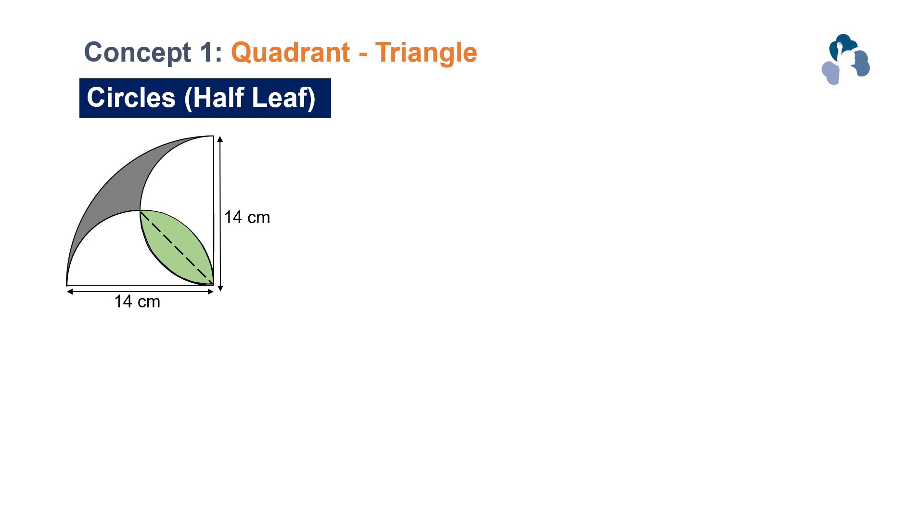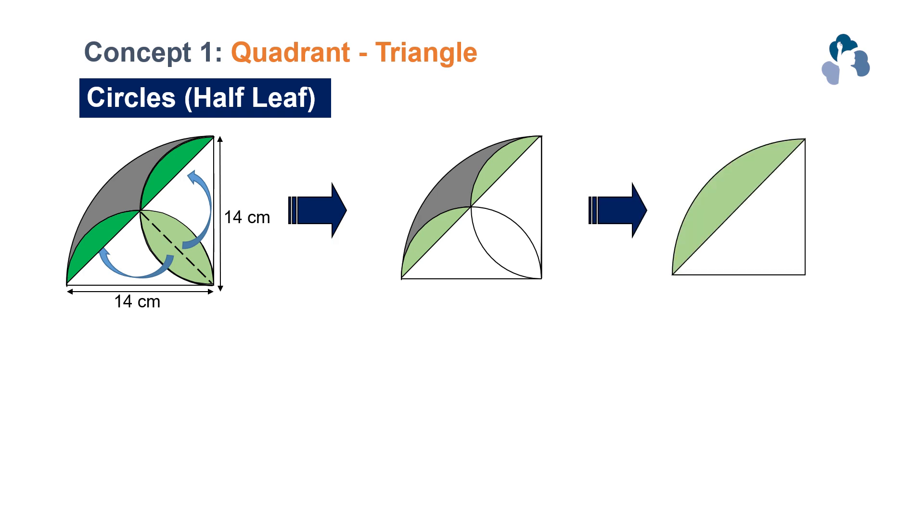Split that shaded region into two parts. There is this method that we have taught before. It is called cut and paste. Cut these two regions and paste it into the unshaded part as shown. And here you get the basic shape again, which is a quadrant with a triangle overlapping the shape.